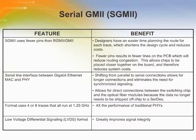With the new serial SGMII interface, parallel connections can be shifted to serial allowing for longer connections and eliminating the need for synchronized signaling. The SGMII format uses 4 or 8 traces that all run at 1.25 GHz, giving a 4 times performance increase over traditional PHYs. Additionally, the low voltage differential signaling format greatly improves signal integrity.